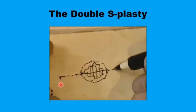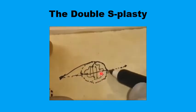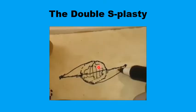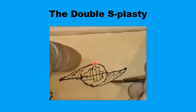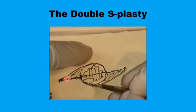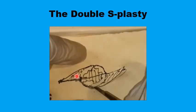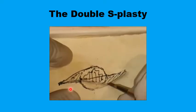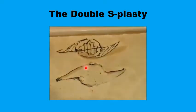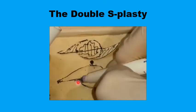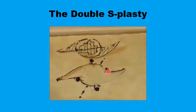In the double S-plasty technique, the central segment with the lesion and safety margins is marked along with the usual fusiform configuration, but only half the extensions are taken — one half on one side and the other half on the opposite side. Sutures are placed obliquely across the central segment from each angle to the midpoint of the opposite side, creating diagonal tension. This puts extra tension on the central compartment, but saves half the tissue that would otherwise be discarded.